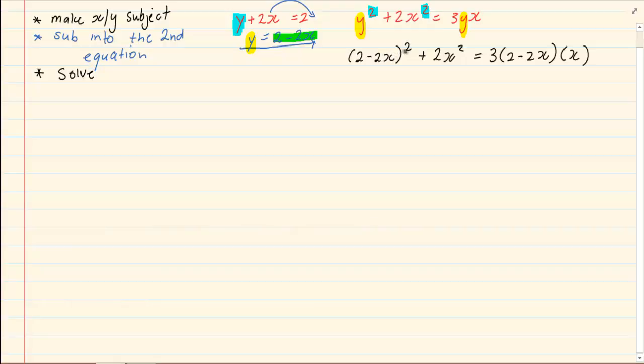Here, I am going to use simplifying where we start getting rid of the brackets. So, we have 2 minus 2x into 2 minus 2x. Thus, the bracket is repeated two times. Plus, 2x squared is equal to 3 into 2 minus 2x into x.